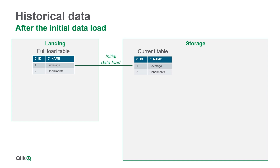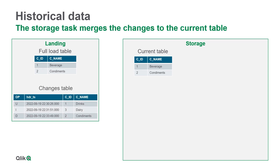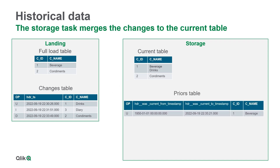After the initial data load, the table contains two records. When new changes arrive to the landing, beverage is renamed to drinks. There is also a new category added and condiments is deleted.